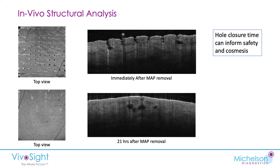We can also look at subsurface images. Immediately after removal, you can see that the microneedles have left holes in the skin — we can measure the depth of those, looking from the top view and the side view. 21 hours after the MAP has been removed, those pores have disappeared virtually; there are just tiny little indentations left. We can still see areas of fluid — pools of fluid in the dermis below where the microneedles were originally penetrated.